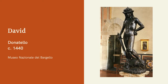His pose is an extreme example of contrapposto, a holdover from the international Gothic style. Goliath's severed head lays in between David's feet. He holds a large sword, most likely the giant's, because the Bible states that David used his slingshot to win the battle.